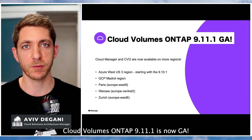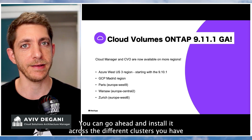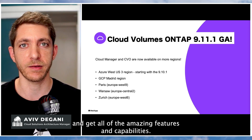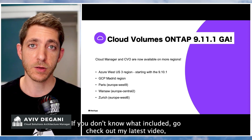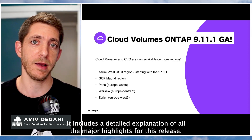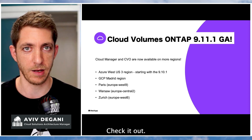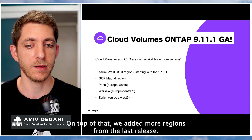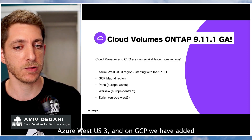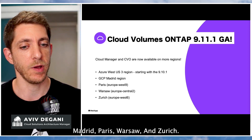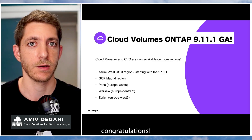Cloud Volumes ONTAP 9.11.1 is now GA. You can go and freely install it across the different clusters you have and get all the amazing features and capabilities. If you don't know what's included, go check out my latest video — it has a detailed explanation of all the major highlights. We also added more regions: Azure West US3, and on GCP: Madrid, Paris, Warsaw, and Zurich.